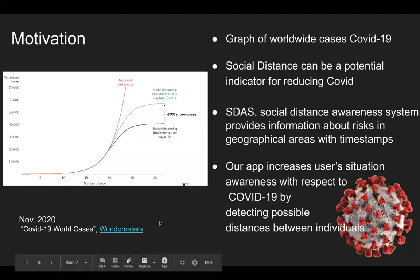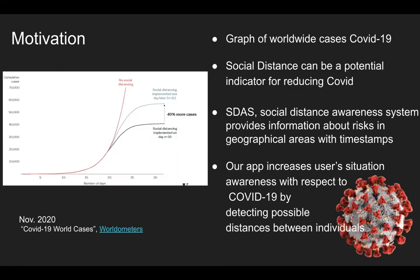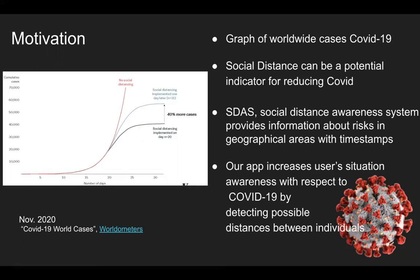The motivation behind the development of our application is today's COVID-19 pandemic. The number of cases reduced by following social distancing is more than 40%, as we can see in the graph here. Our social distance awareness system provides information about the risk involved in geographical areas along with timestamps. Our application also increases user awareness by detecting possible distances between individuals, which is really important in today's COVID-19 situation.